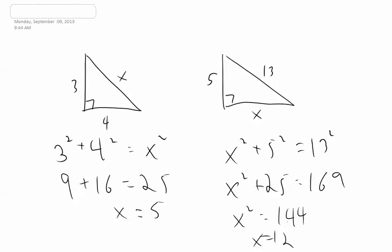Just be careful of this one here, x is equal to 12. A lot of students will want to put 5 squared plus 13 squared is equal to x squared. But again, that's the hypotenuse, so that has to come after the equal sign.